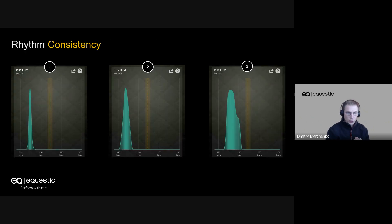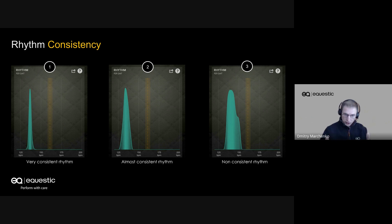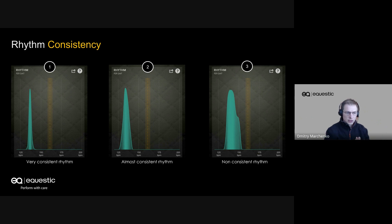Let us look at three examples. All three charts are about rhythm — this is trot rhythm, I picked just an example. You can see they differ. They are all the same color, but they differ in shape. Comparing them, we can clearly learn from a quick view that chart number one shows very consistent rhythm, and chart number three shows very inconsistent rhythm.